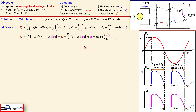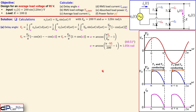Since we need alpha such that V_avg equals 95 volts, and we know Vm is 200 volts, we rearrange and solve. This results in alpha equals 1.056 radians, which converts to approximately 60.51 degrees. That is the answer to question (a) — the delay angle needed to achieve 95 volts average load voltage.